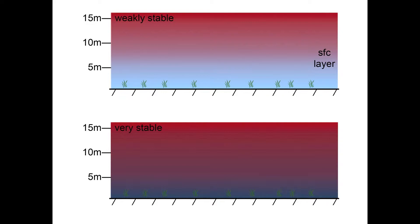The surface layer is often considered to be the lowest 10% of the boundary layer. This is illustrated in the upper panel of the figure, which shows the colder surface layer in blue, with warmer air just above shown in red. Parameterization of surface fluxes for this case is normally well approximated by similarity theory, based on atmospheric variables in the surface layer. We will nominally refer to this case as the weakly stable surface layer.